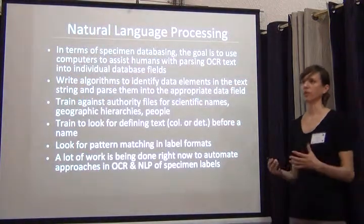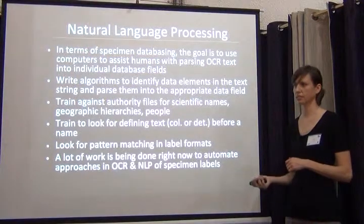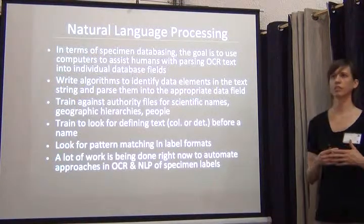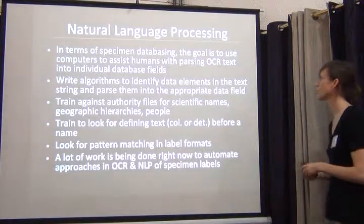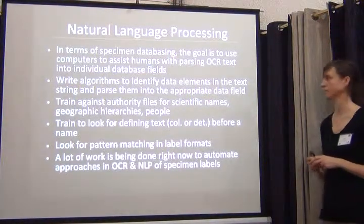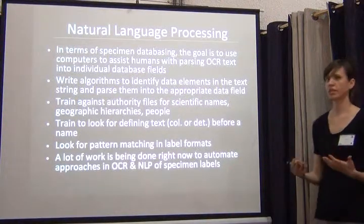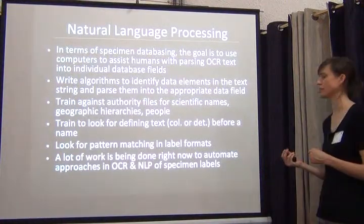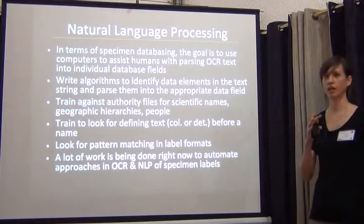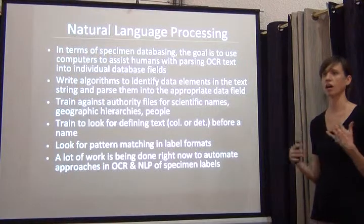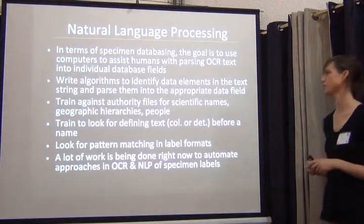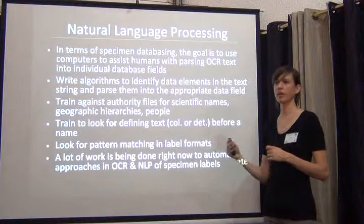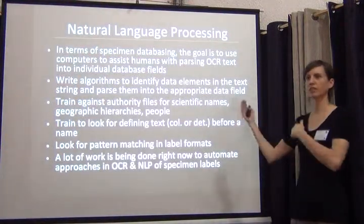How do we use computers to help us with this? This is where the concept of natural language processing comes in. In terms of specimen databasing, the goal is to use natural language processing to assist humans with parsing the OCR text into database fields. What has to be done is to have programmers write algorithms to identify data elements in the text string and parse them into the appropriate data fields. This requires technical people to go through all the options and write these algorithms, but once you get started, you can use all of the authority files — things we talked about yesterday — as a lookup list for these algorithms.